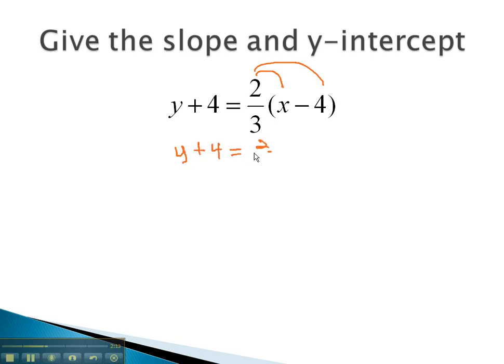y plus 4 equals 2 thirds x minus... remember, as we multiply 2 thirds times 4, we put the 4 over 1 and multiply straight across. This gives us 8 thirds.